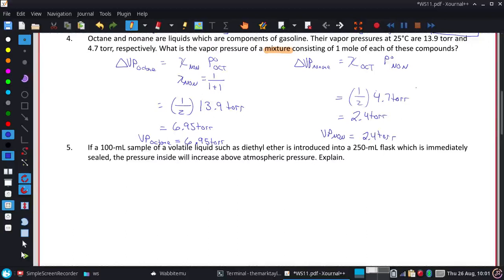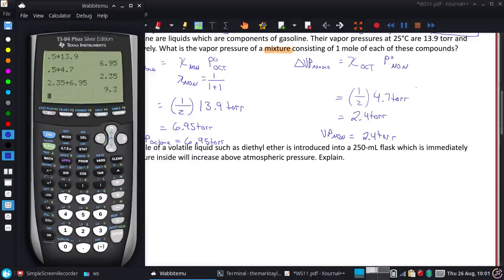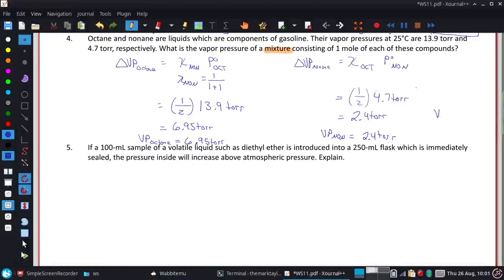And now we've got to take care of that mixture word because it wants to know what the vapor pressure is of that mixture. These behave just like any other gases. We can actually just flat out add those together. So I'm going to take my 2.5 and add the 6.95 and I get an overall vapor pressure of 9.3, and I would only have the one decimal place because of 2.4. So the overall vapor pressure is 9.3 torr.